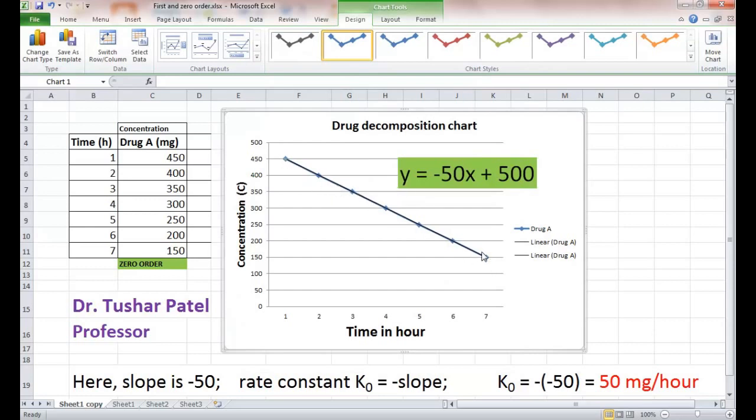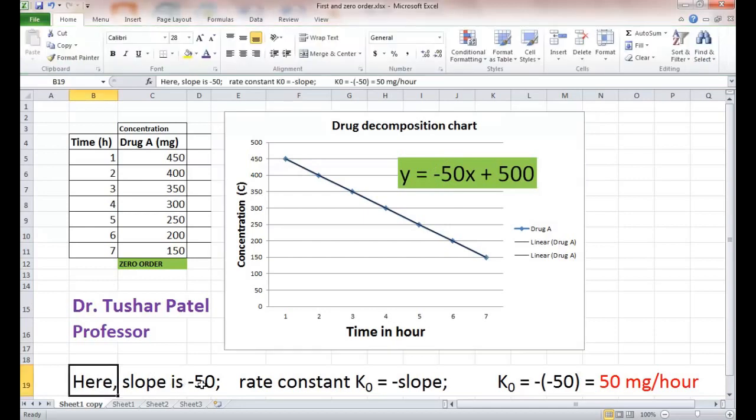The equation of this straight line is y equals minus 50x plus 500. If you convert this equation into y equals mx plus c, then m, that is the slope of this line, is minus 50.